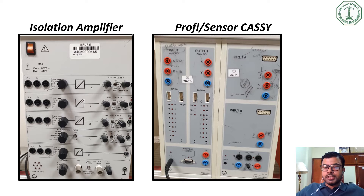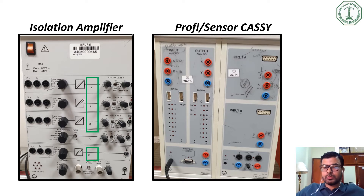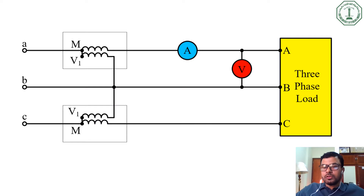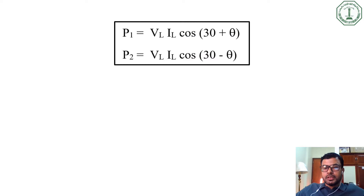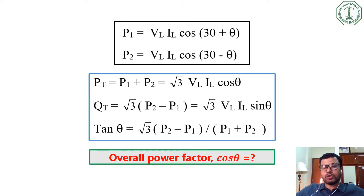Our available experimental setup has four measurement channels, meaning we can prepare a maximum of two wattmeters. However, in this experiment we have to measure three-phase powers. Therefore, we will be using the well-known two wattmeter method. These two wattmeters give us power P1 and P2, and using these formulas we can calculate the total real and reactive powers as well as the overall power factor.